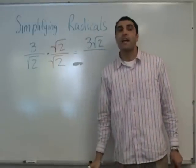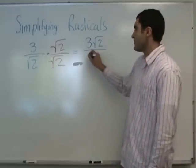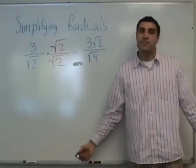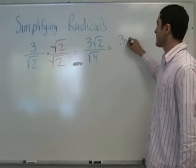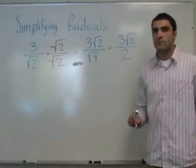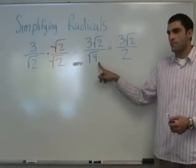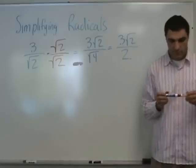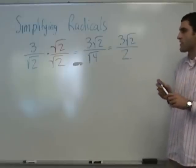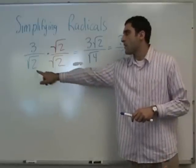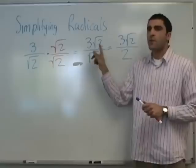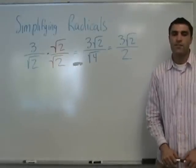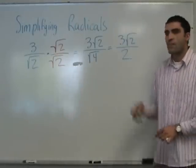What is the square root of 2 times the square root of 2? The square root of 2 is squared, right? So what's the square root of 4? 2. As long as the numbers are the same inside the square root, you can multiply them. If one's inside and one's not, you can't combine them like that. So the answer is 3 root 2 over 2.